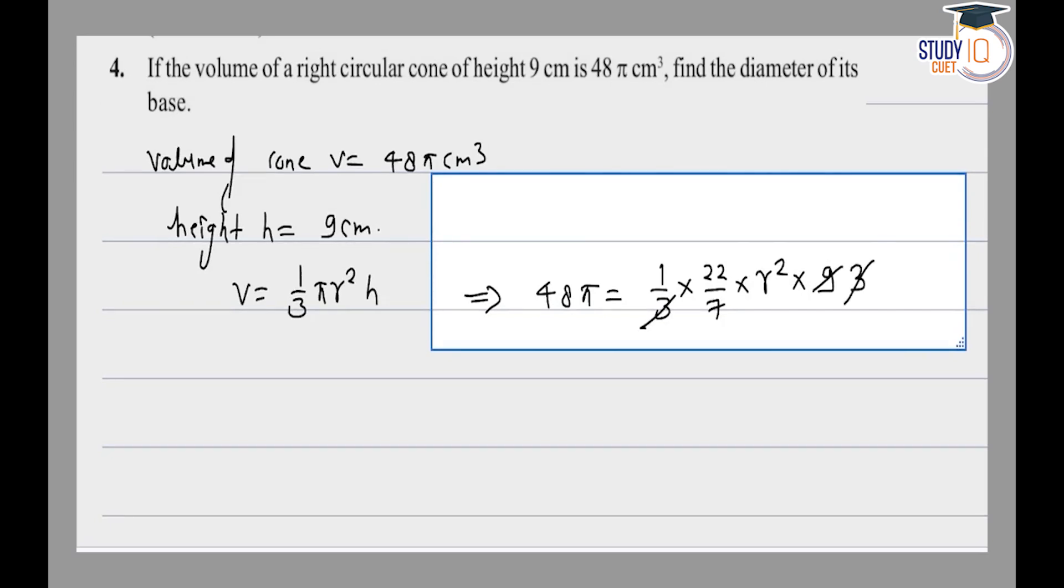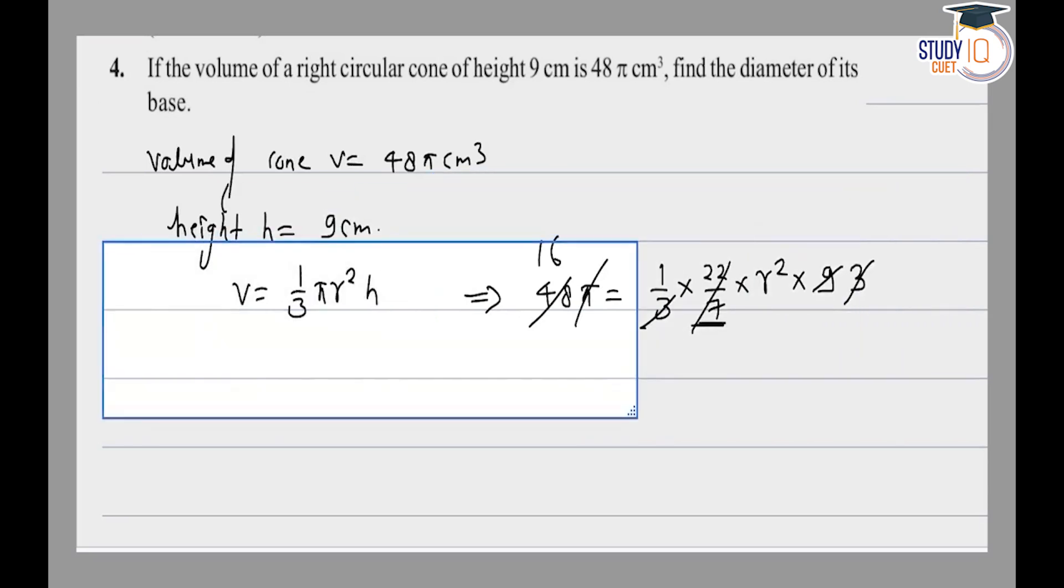Three into three cancels, giving 16. The values here cancel, so r² equals...